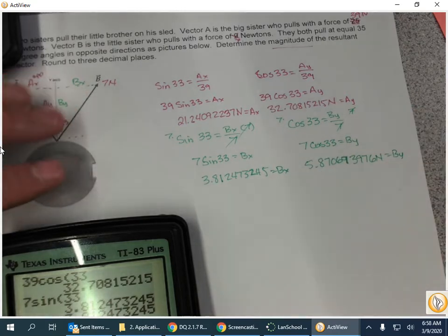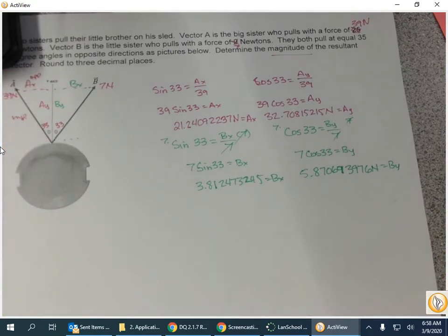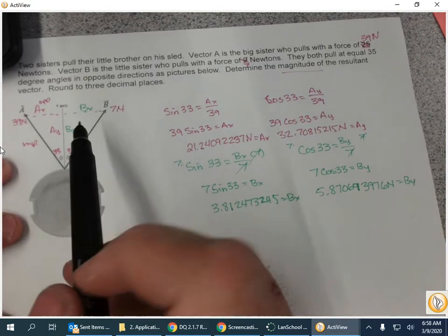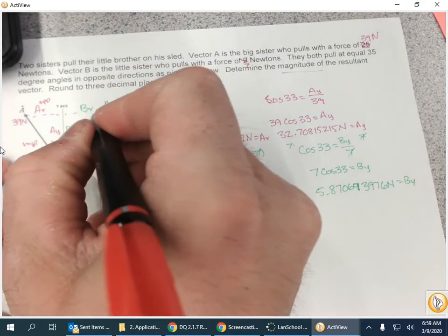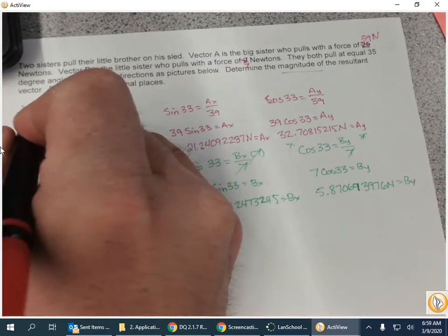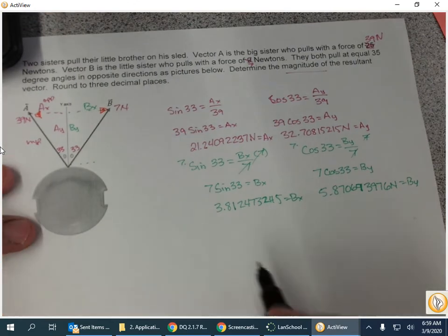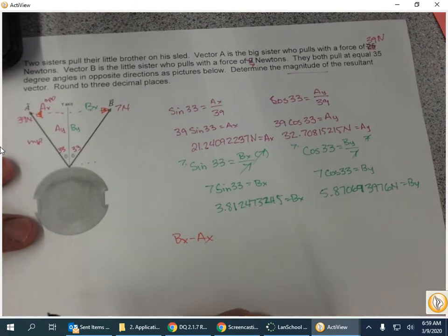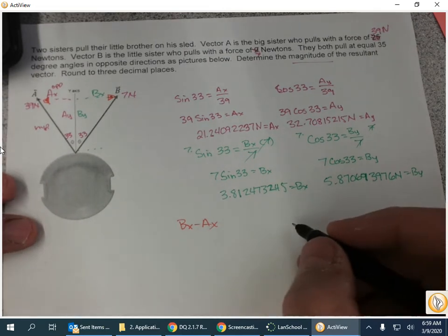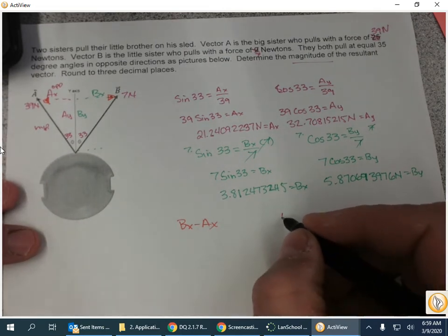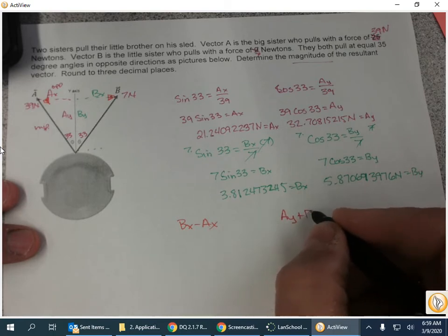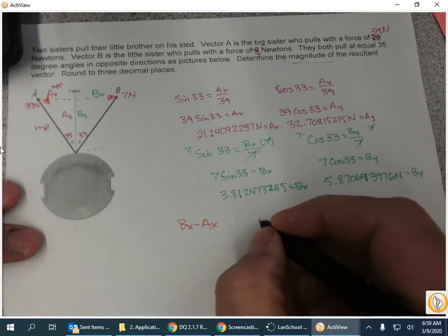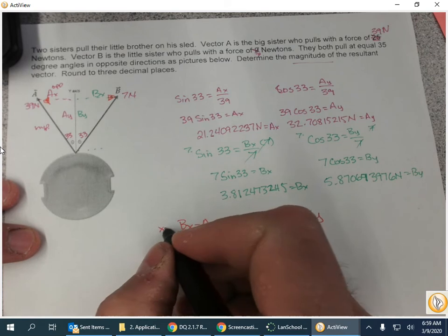And what we've got to do here is we've got to combine our x's and our y's. So our x's are actually traveling in opposite directions, so we're going to subtract them. So we'll say Bx minus Ax because Ax is the one going to the left. And for the y's, we're going to add them. So Ay plus By will give me my y component.